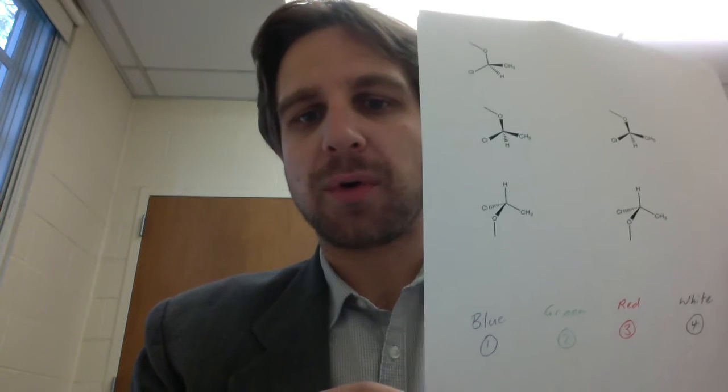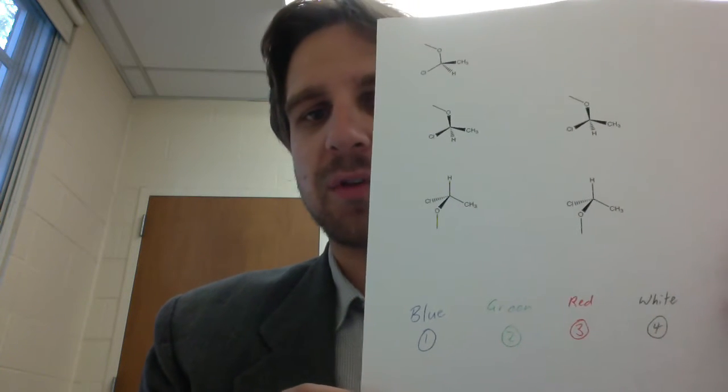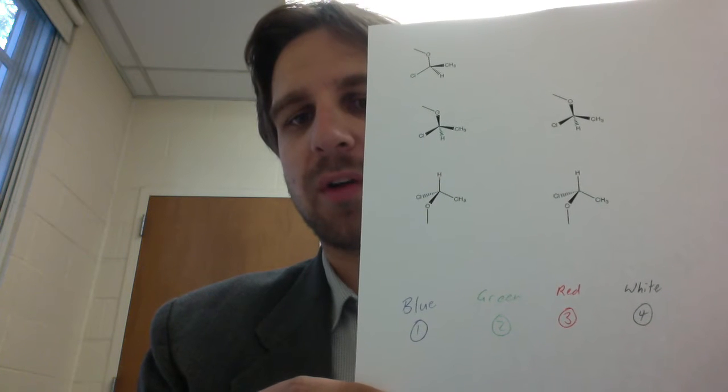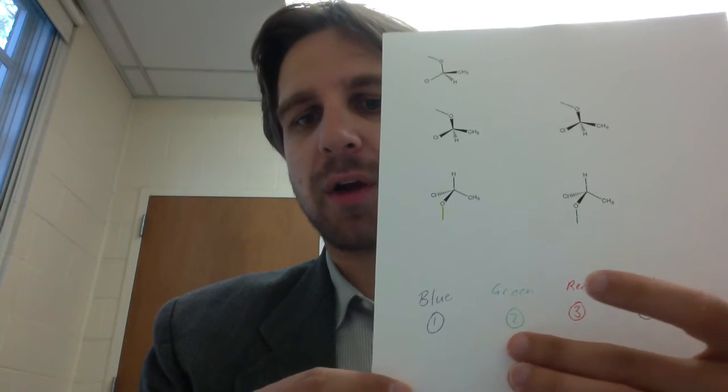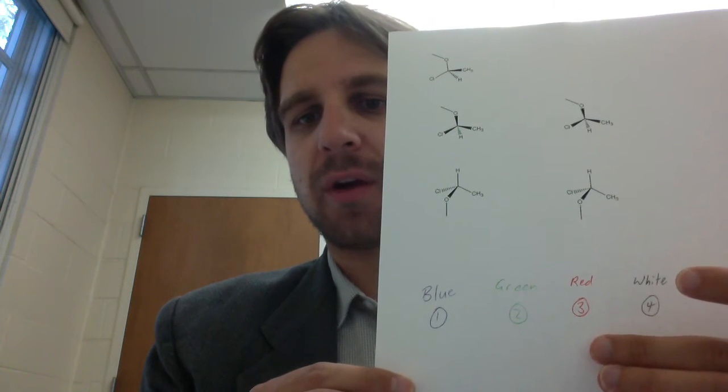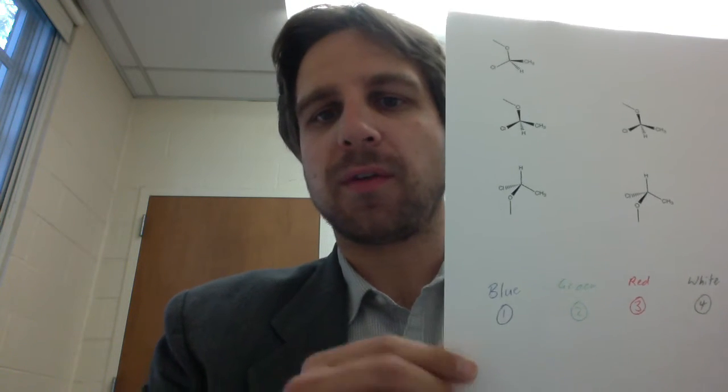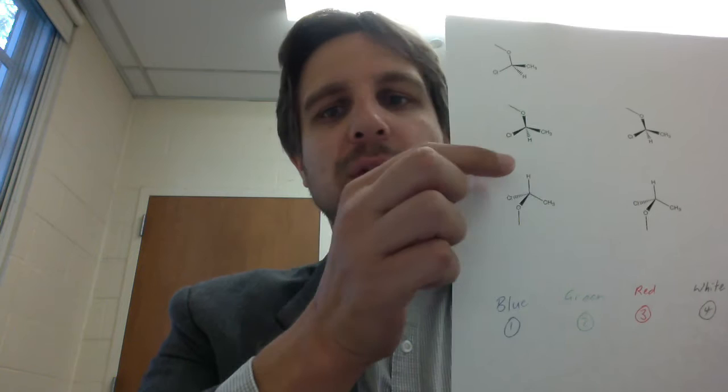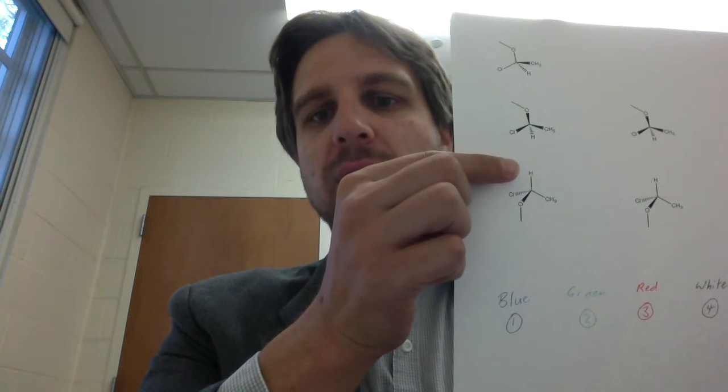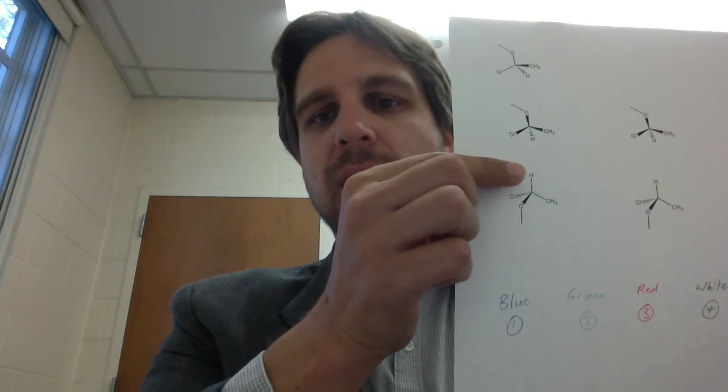The lowest priority atom, in this case I'll be using the convention that blue is priority 1, green is priority 2, red is priority 3, and white is priority 4. It's very difficult to do when the lowest priority group is, for instance, along the plane of the page, like this H here.